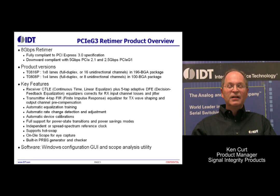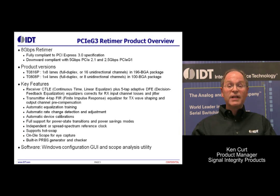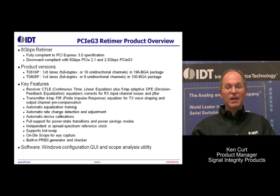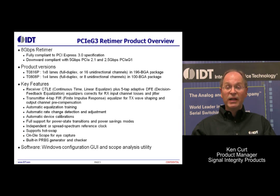To hit the highlights of our Gen3 retimer: first of all, it's fully PCI Express Gen3 specification compliant. It's also fully downwards compatible to the 5 gigabit Gen2 and 2.5 gigabit Gen1 specifications. We're planning for two versions of the product — a 16-channel version in a 196-pin BGA package, and a 100-pin BGA package which is footprint compatible with our four-lane repeater device, the T0808P.